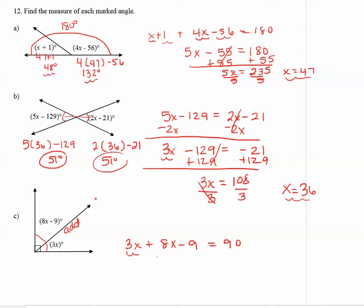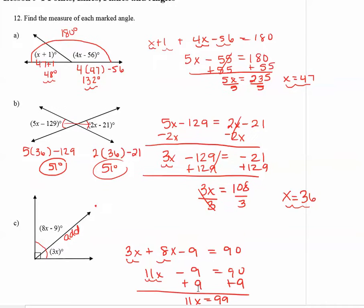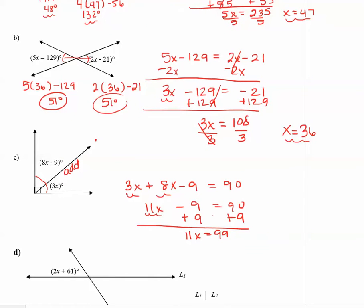Adding the x's together gives us 11x minus 9 equals 90. Now we want to get 11x alone. So the opposite of subtracting 9 is to add the 9 to both sides. And this results in 11x equals 99. Now let's divide both sides by the 11 to get x alone. So x equals 99 divided by 11 or 9.